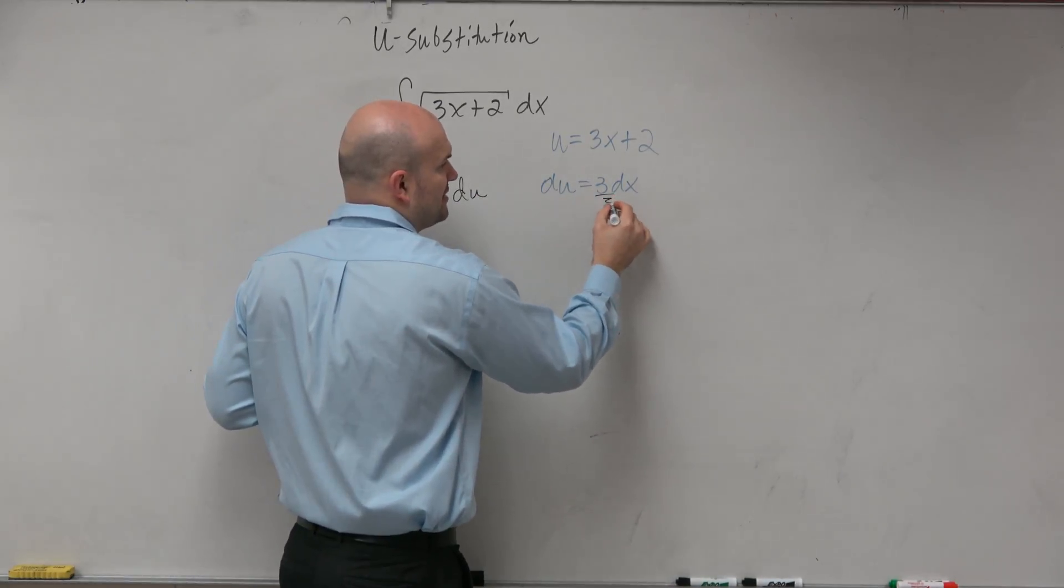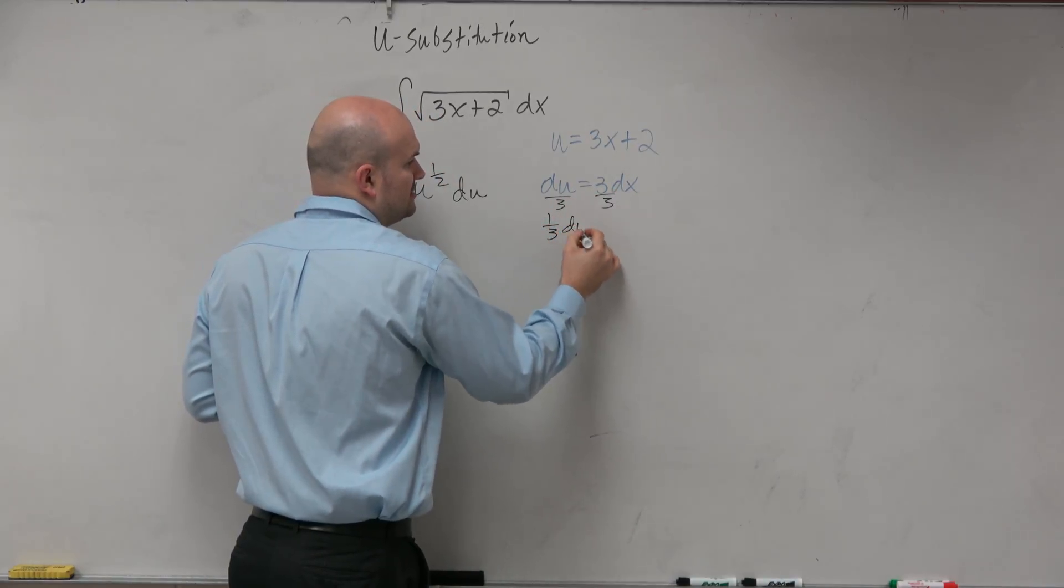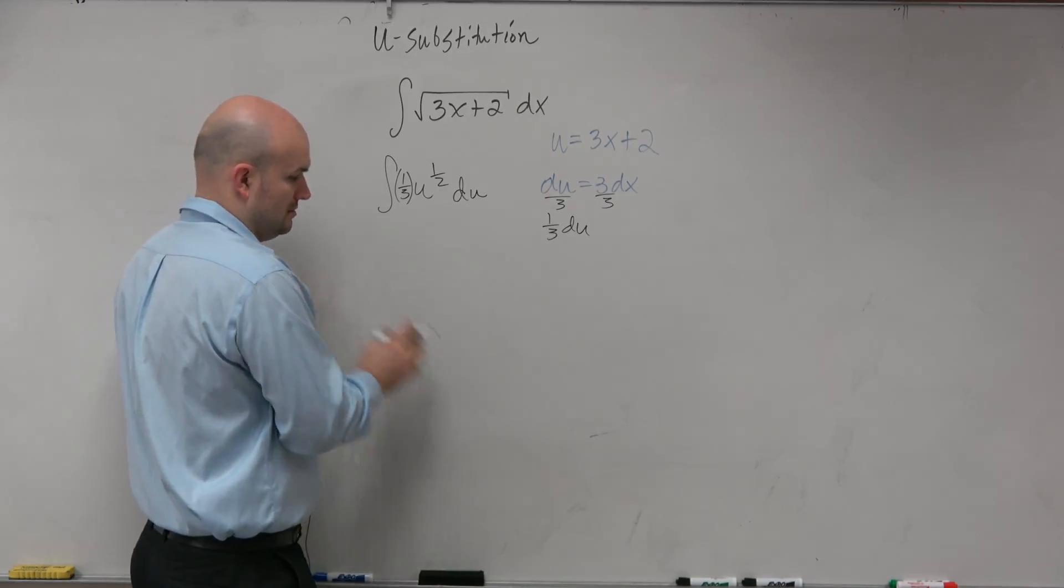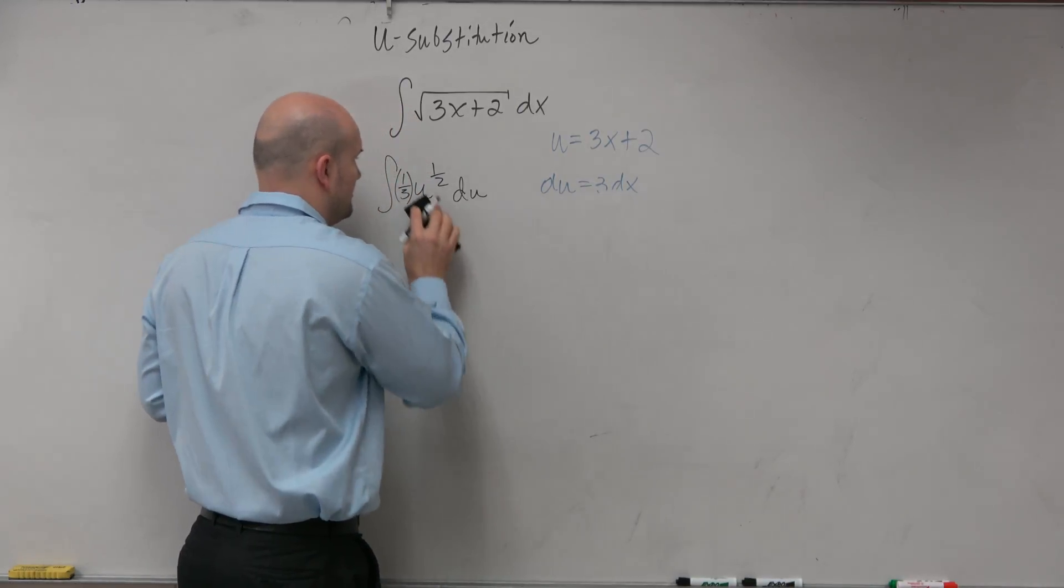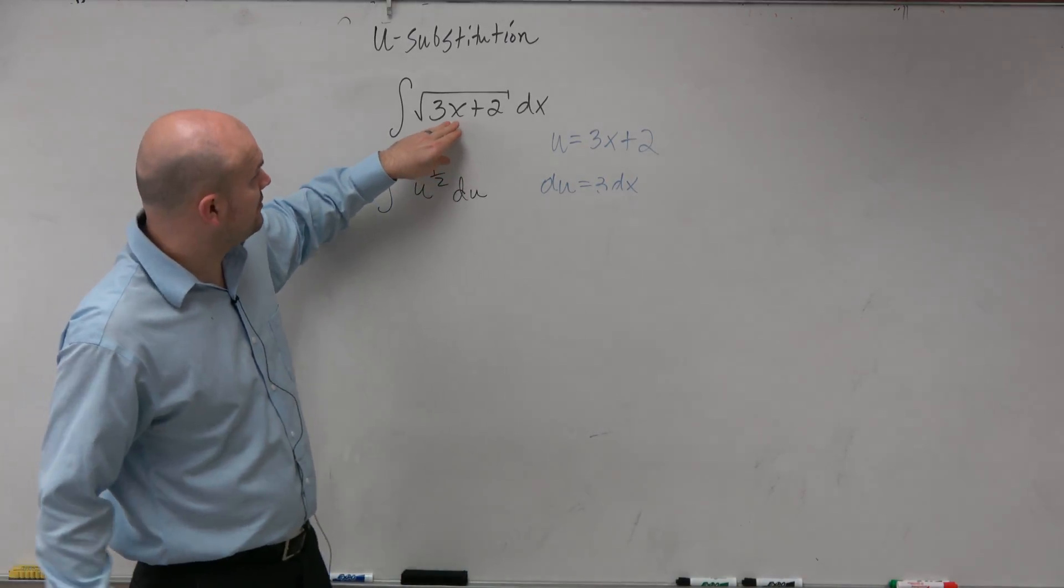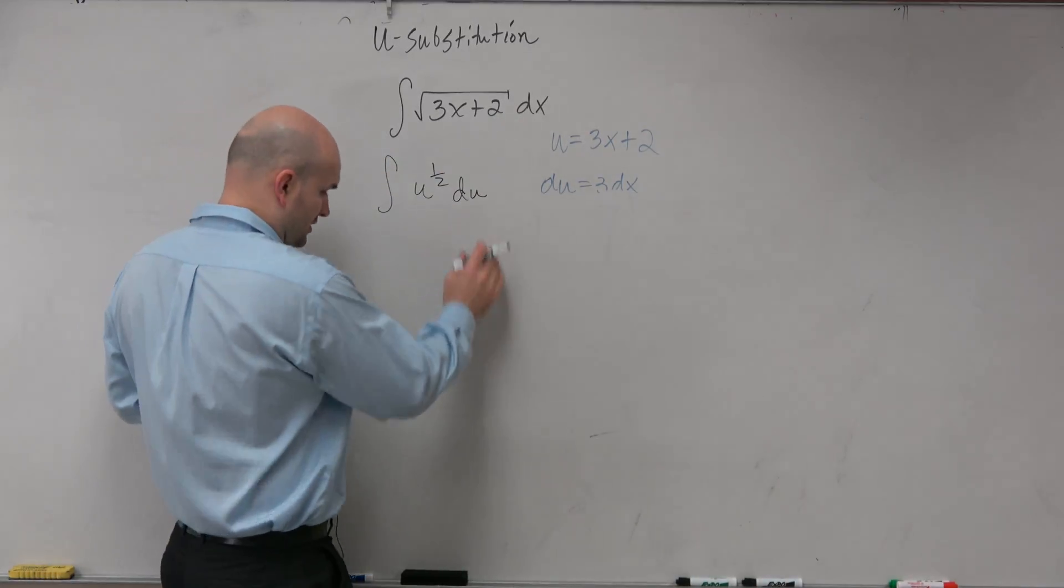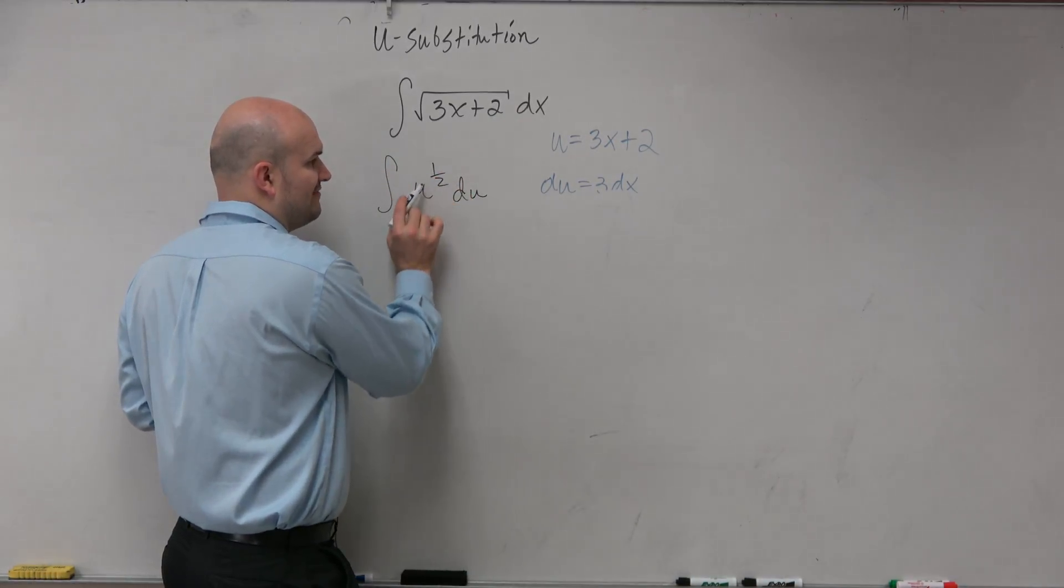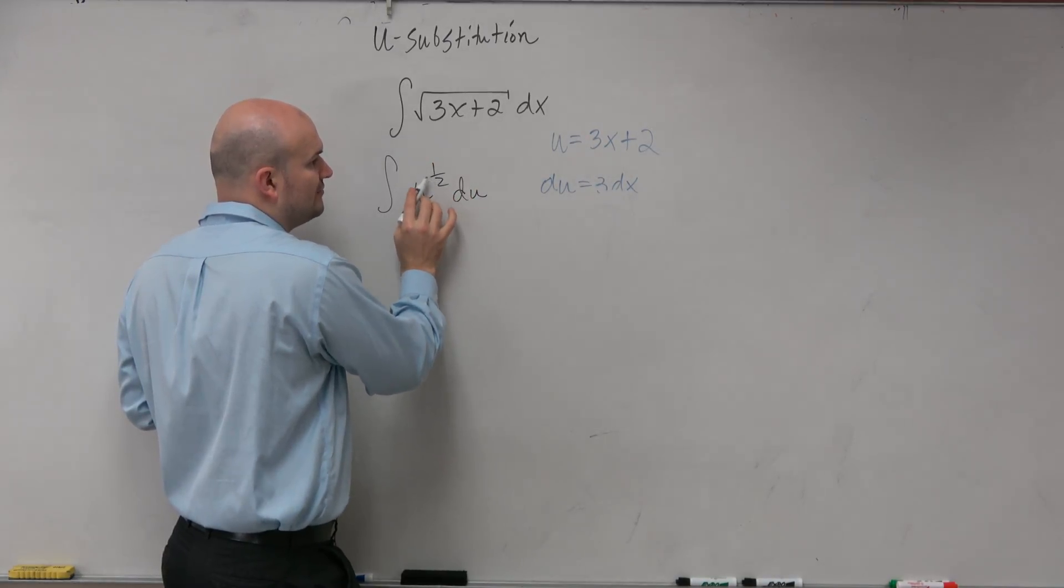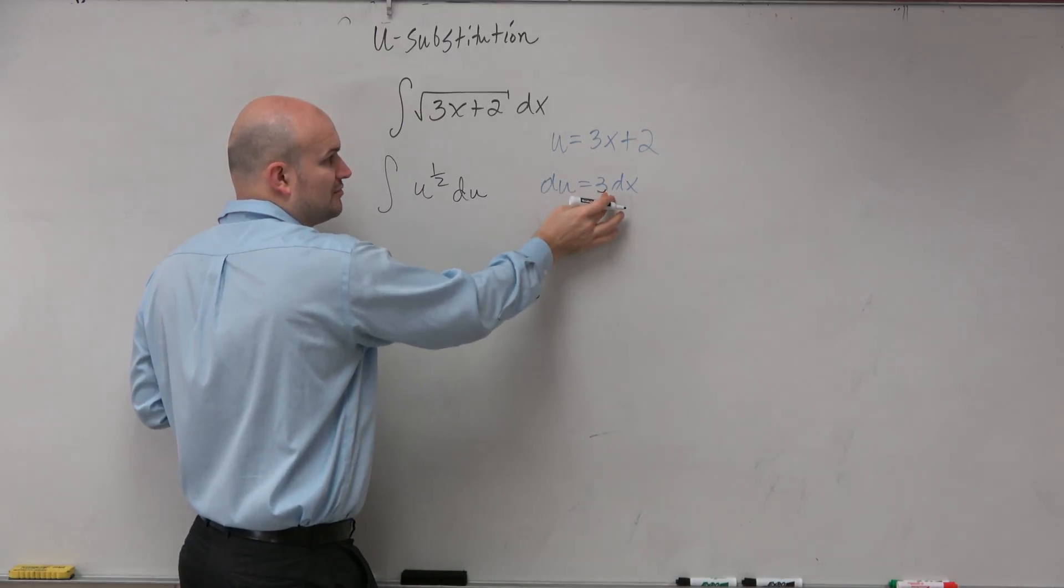Because wouldn't you guys agree, if I divided by 3 here, if I solve for dx, I would have 1/3 du. Right? The problem is square root of 3x plus 2 dx. So if you were to replace this u, if I say u is 3x plus 2, and I want to find the integral of u to the 1/2 du, well, du is equal to 3 dx.